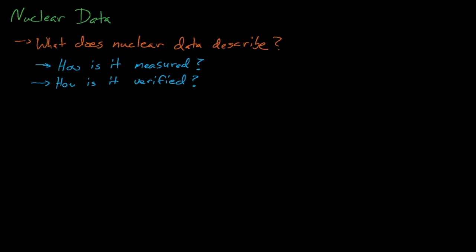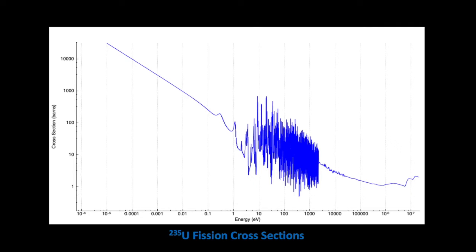In general, nuclear data tends to follow this general structure. There are four general regions for cross-sections as a function of the incoming energy of a neutron. At low energies, cross-sections tend to follow a 1 over v distribution, where v is the velocity of the neutron interacting with a nucleus.